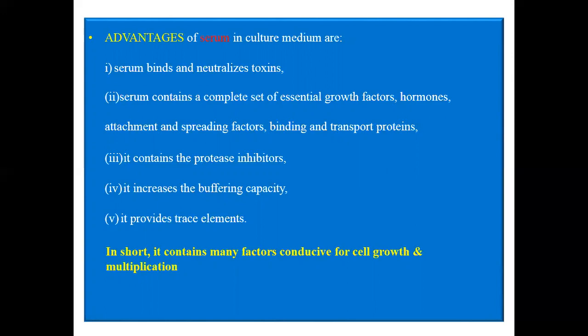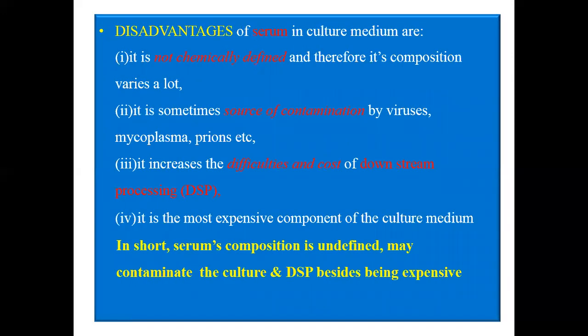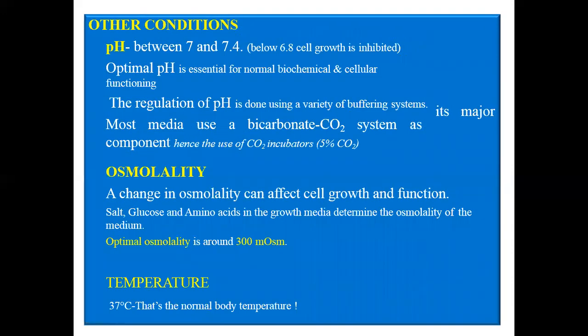Serum contains many factors conducive for cell growth and multiplication. The disadvantages of serum in culture media are: it is not chemically defined and therefore its composition varies a lot; it is sometimes a source of contamination by viruses and mycoplasma; it increases the difficulties and cost of downstream processing; and it is the most expensive component of the culture media. In short, serum composition is undefined, may be contaminated, and makes culture and downstream processing expensive.